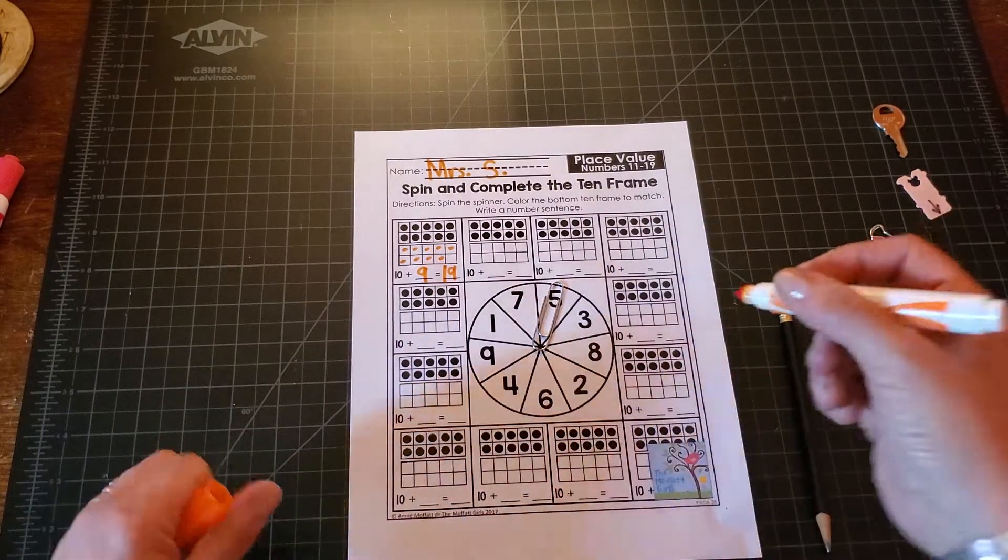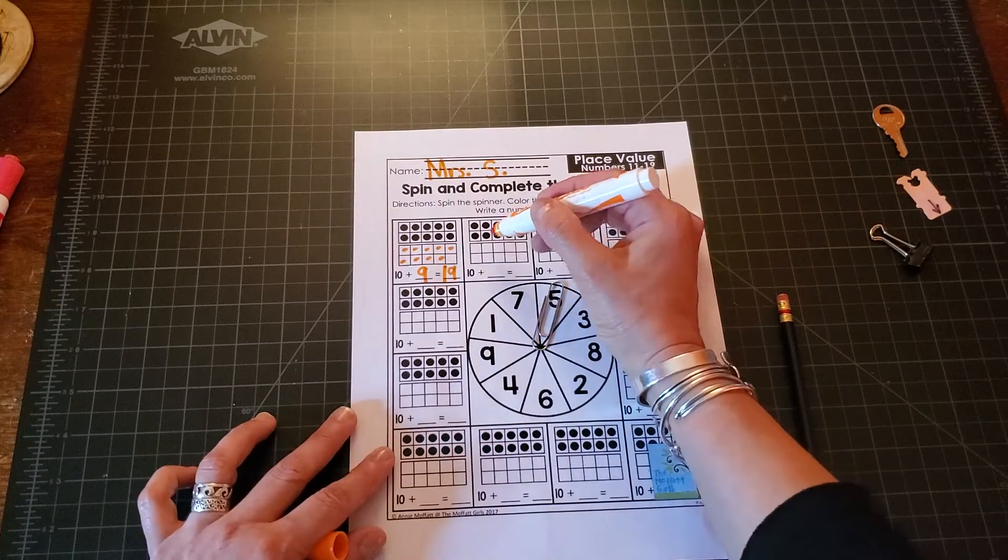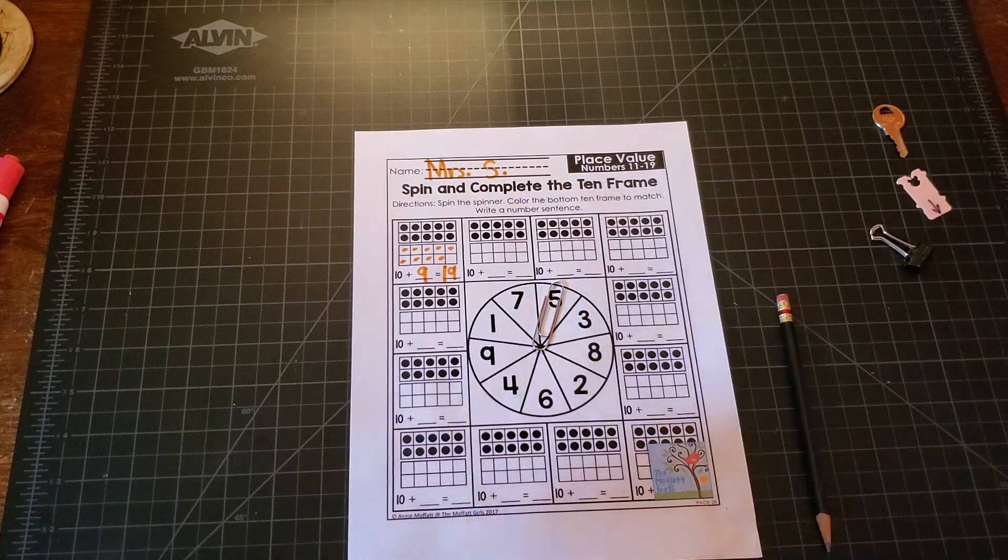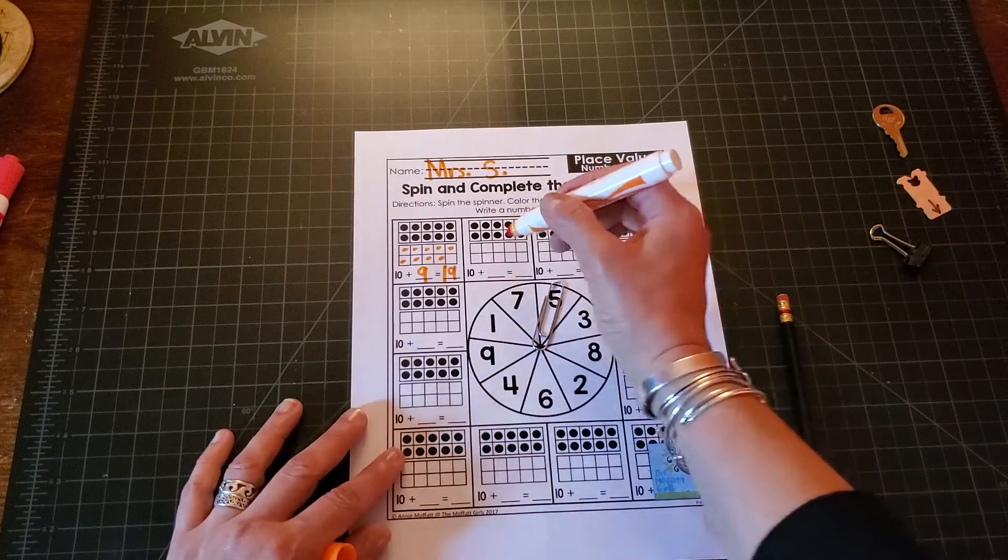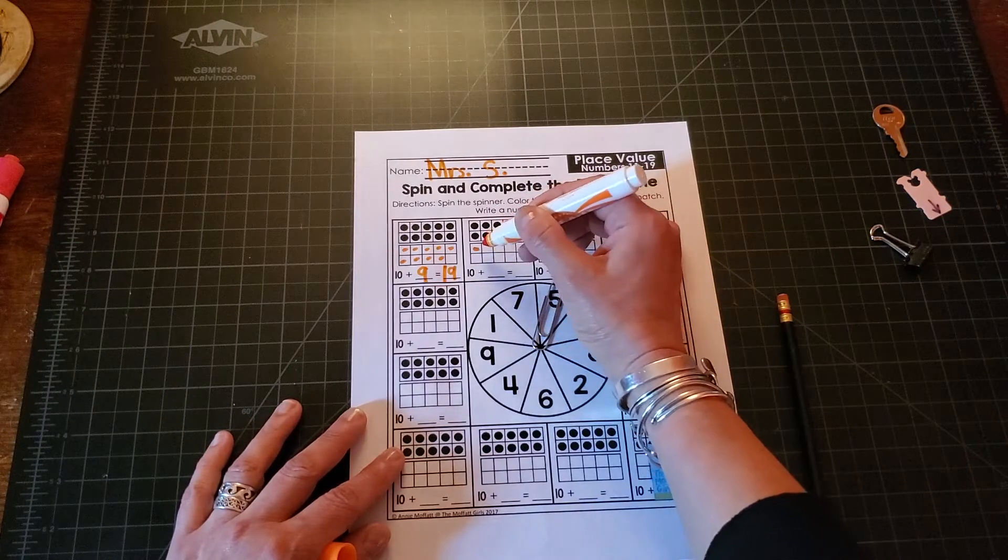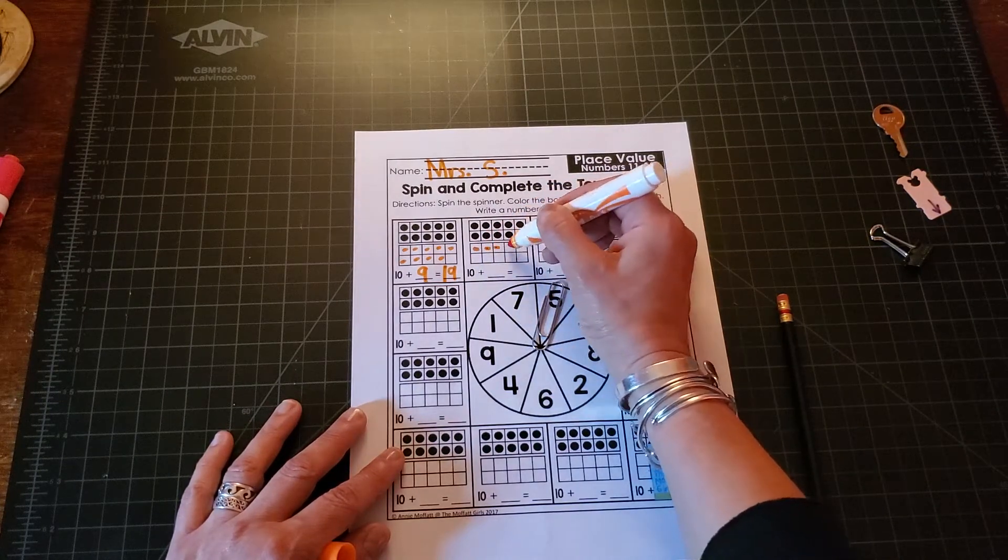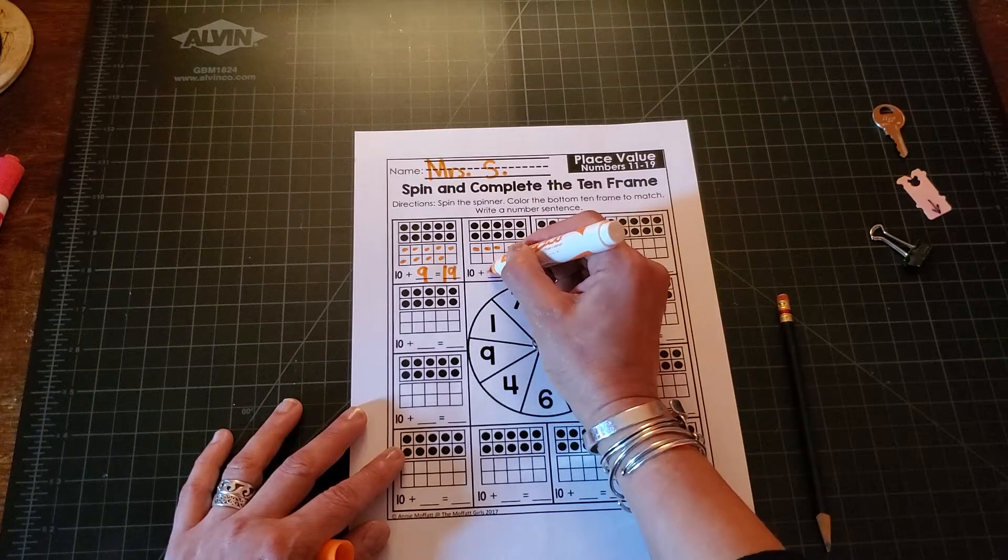Okay so this time I'm going to fill in the top row of my second ten frame because I know that that is five. Top row filled is five. One, two, three, four, five. Write my five here.